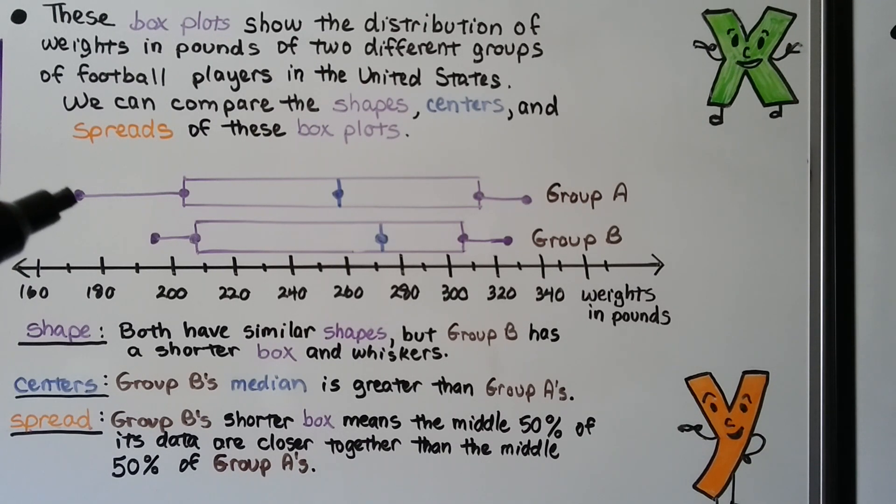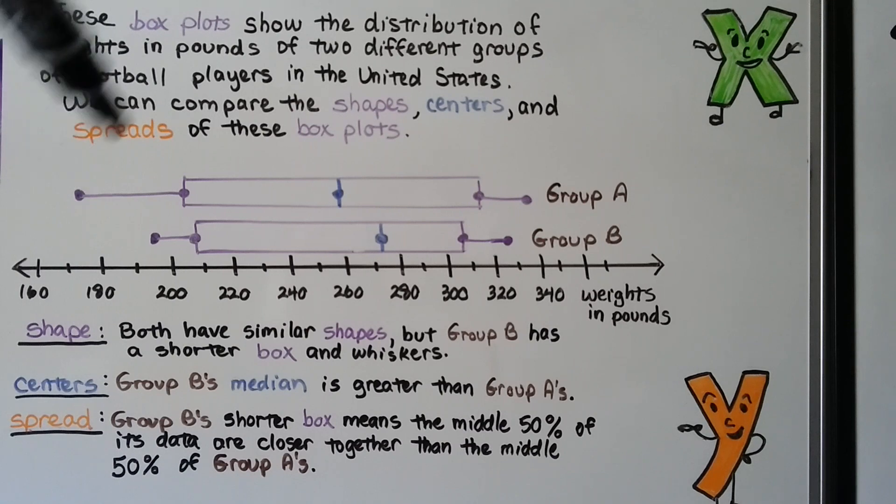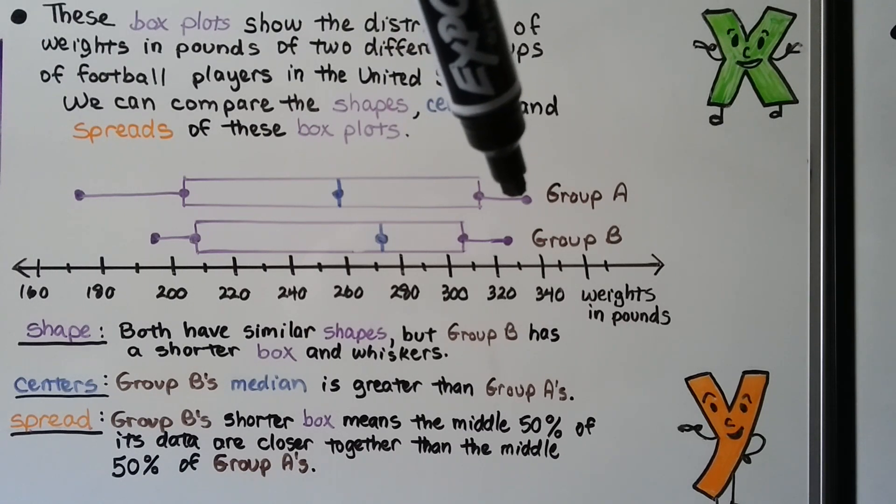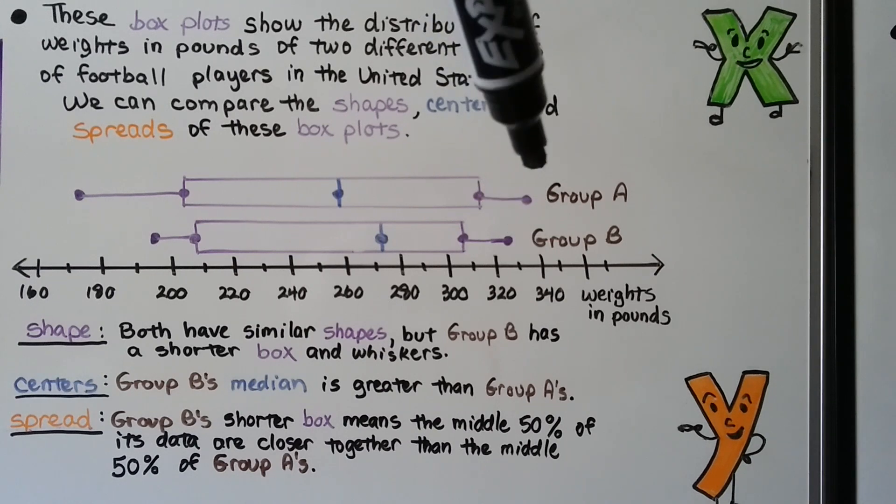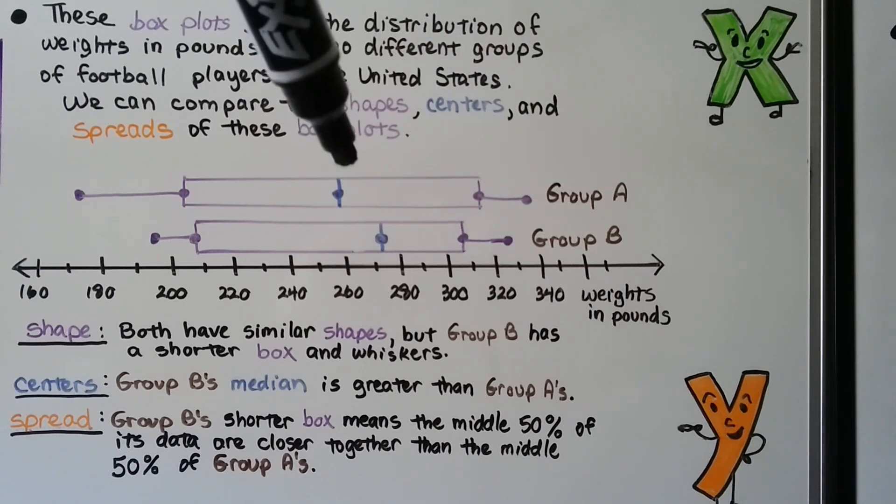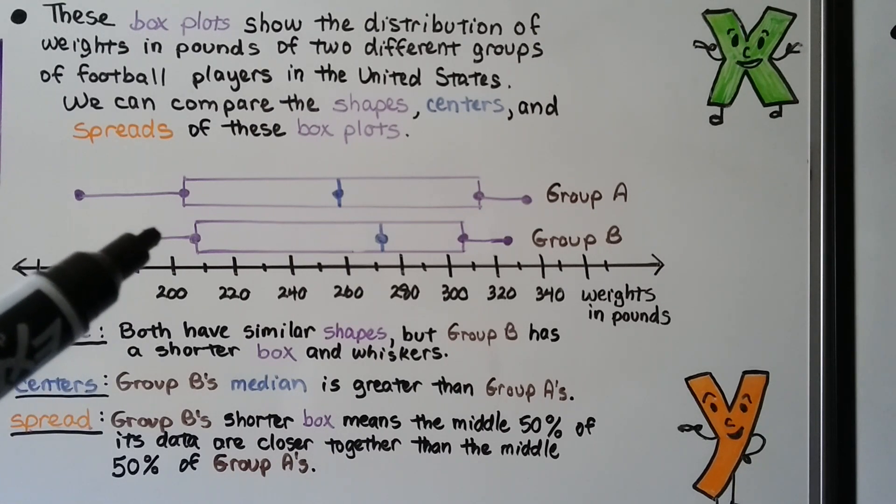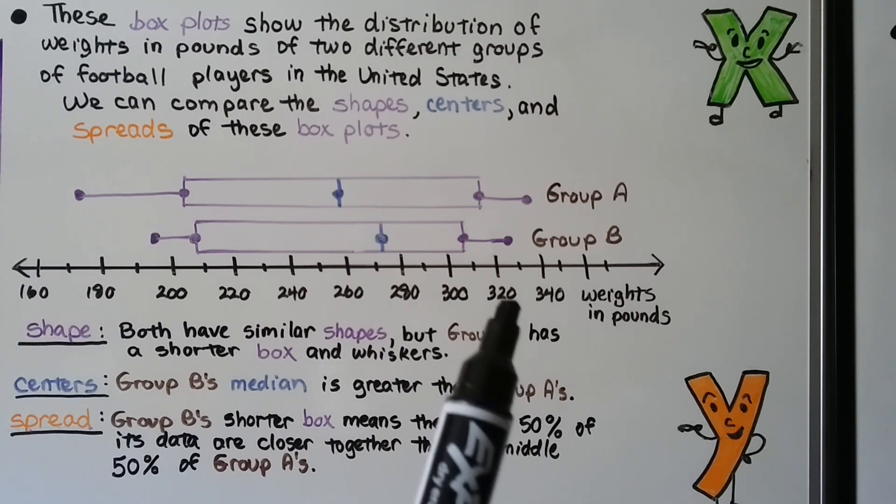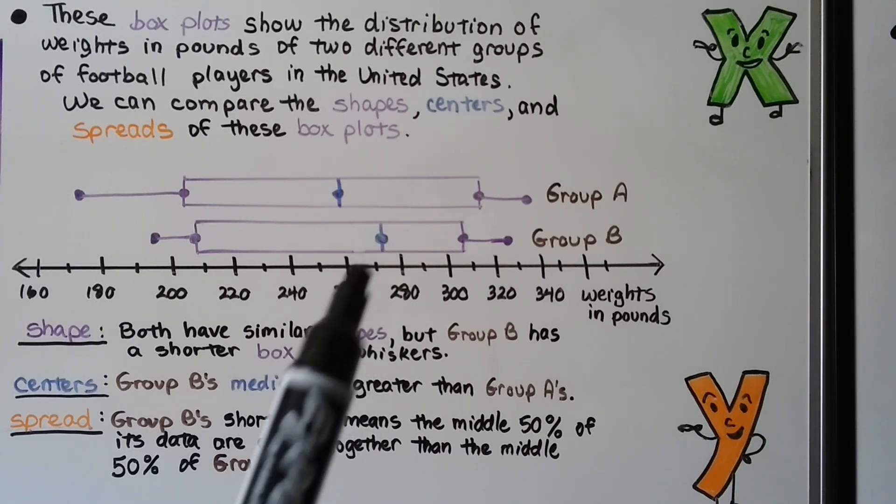So, look at the whiskers. This one is down around a little over 170. That's the minimum value for group A. And this whisker is a little over 330 for group A. And look at where the median is. It's around 260. For group B, it's in between 190 and 200 for the minimum value. For the maximum value, it's a little over 320, and its median is a little over 270.